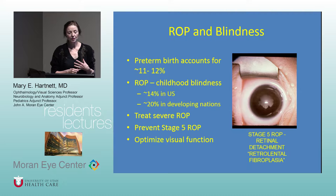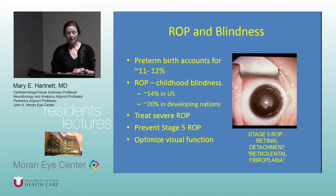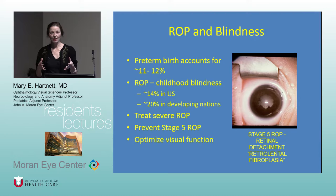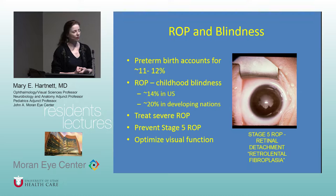Preterm birth in the U.S. accounts for about 11 to 12 percent of all live births. ROP is a leading cause of childhood blindness — about 14 percent in the U.S., but can be up to 20 percent or higher in some developing nations. Those nations may lack resources for perinatal and prenatal care. Maternal nutrition is important, as is oxygen regulation — not just whether they have ventilators, but whether they have respiratory therapists to ensure correct ventilator settings.